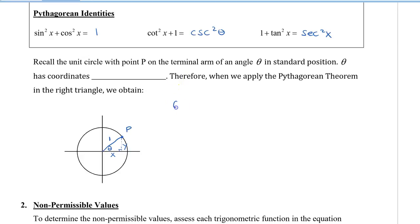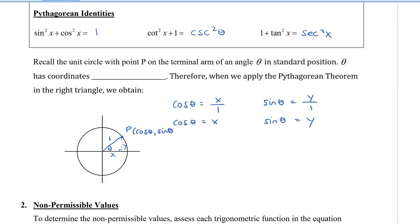Cos theta is equal to x divided by 1, which means cos theta equals x. Sine theta equals y divided by 1, so sine theta equals y. Since x equals cos theta and y equals sine theta, the coordinates of point P must be (cos theta, sine theta). Using Pythagoras on the three sides of the triangle: x squared plus y squared equals 1. Substituting cos theta for x and sine theta for y, we get our Pythagorean identity: sine squared x plus cos squared x equals 1.